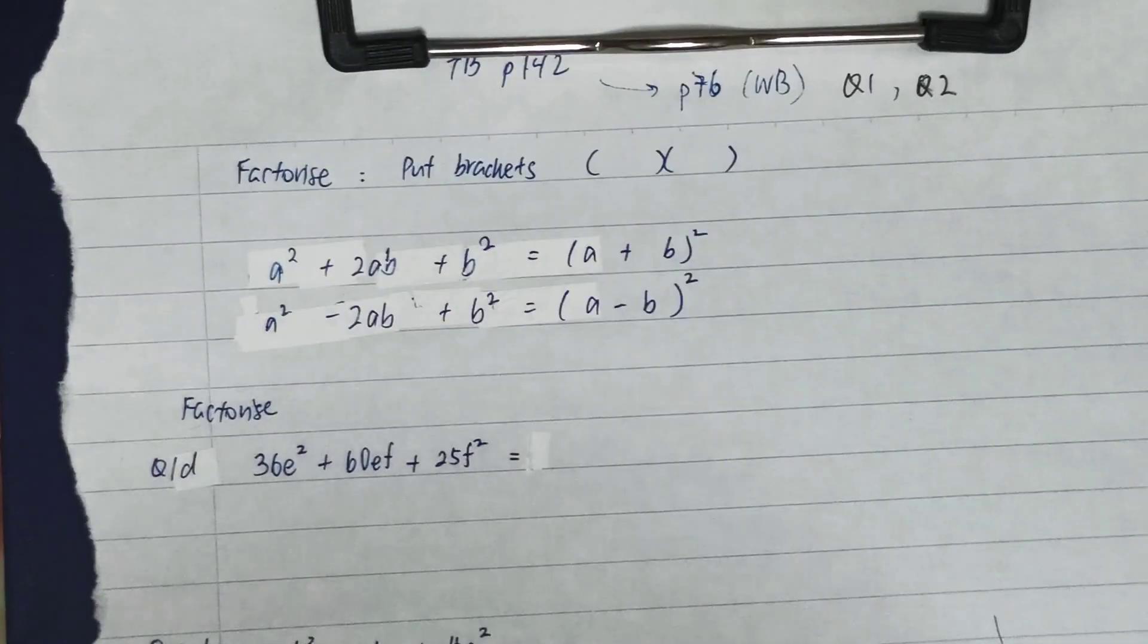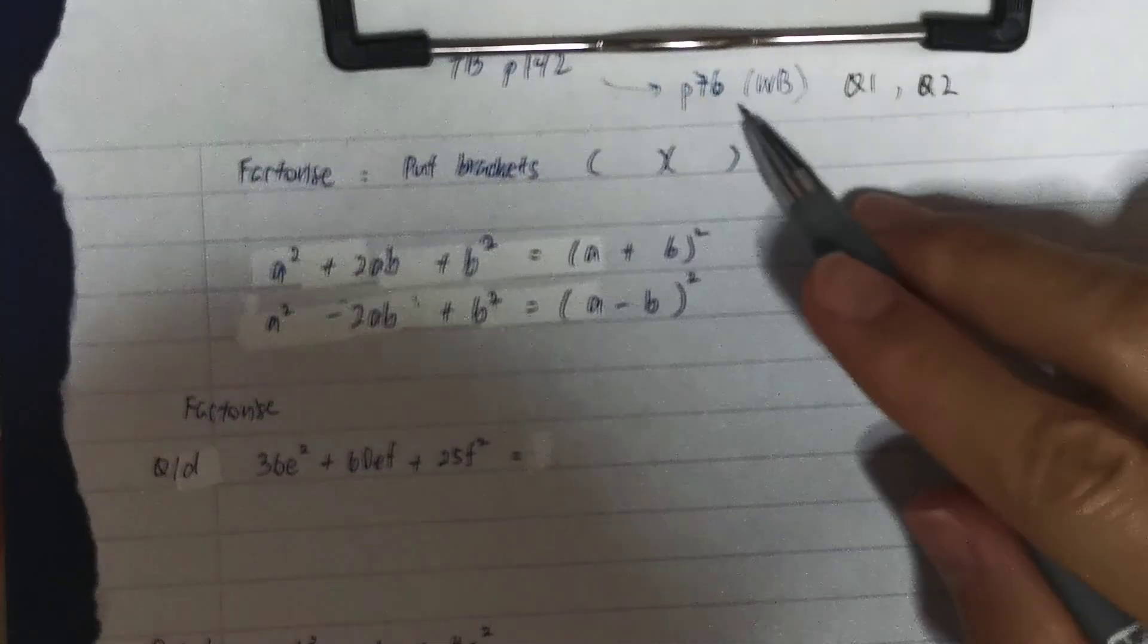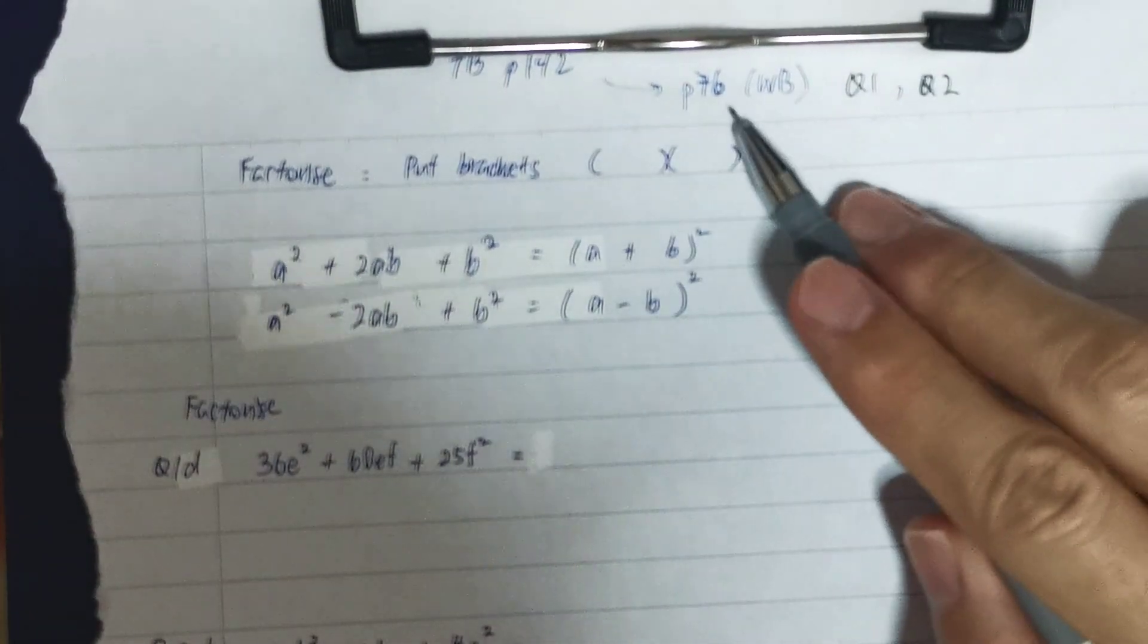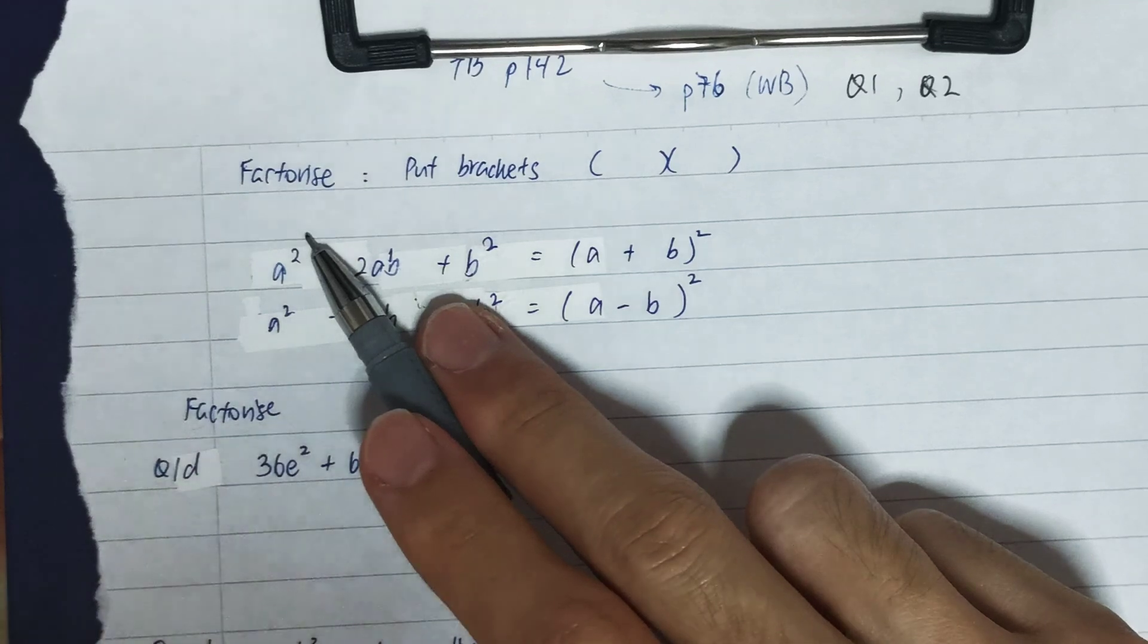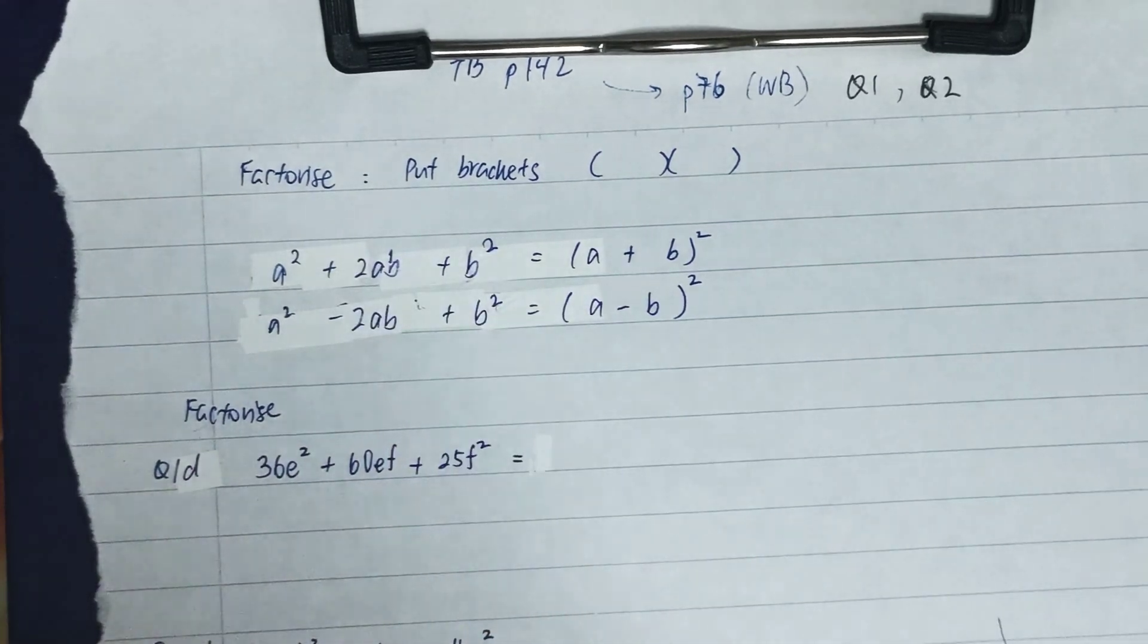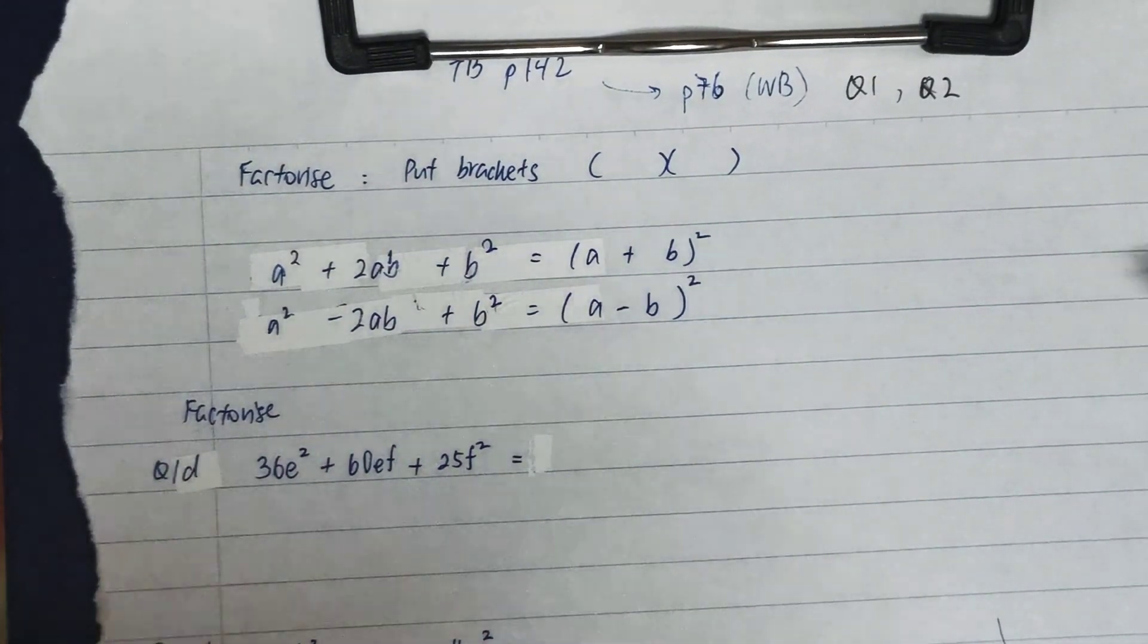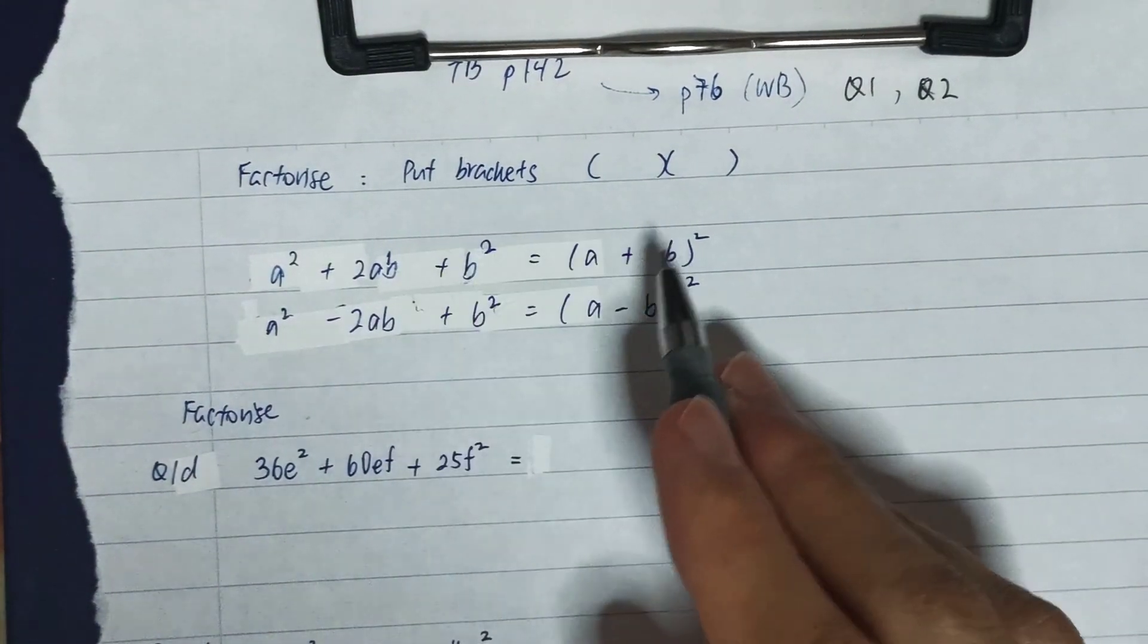Hi my students, now we're looking at textbook page 142, and after that you can do page 76 of your workbook. We are focusing on factorize. Previously we focused on expansion of the special identity, now we are doing the reverse to find out how to factorize it, which is to put back the brackets.